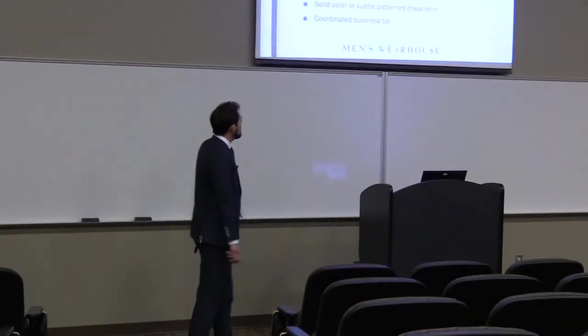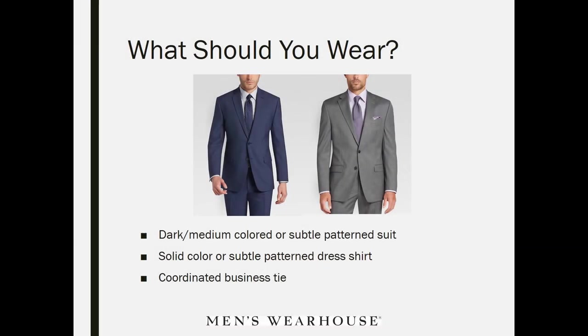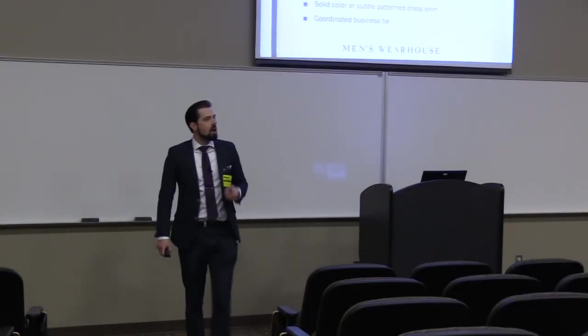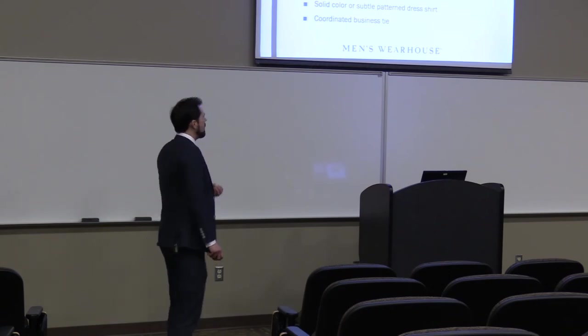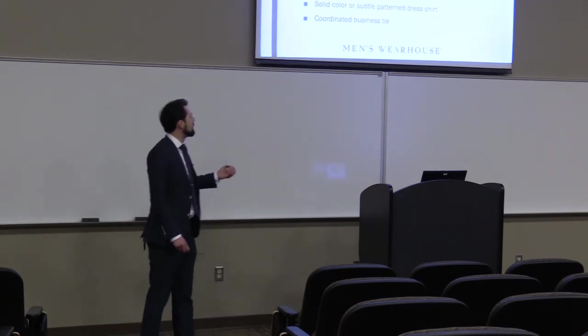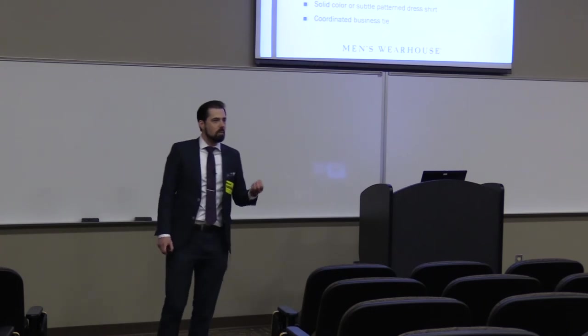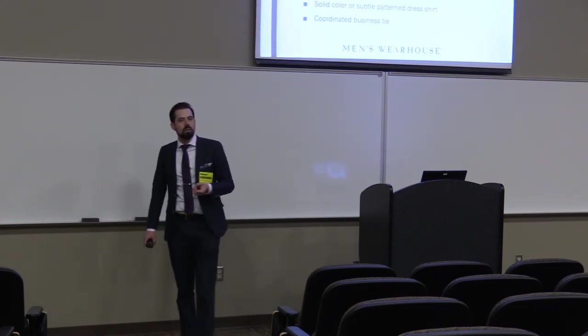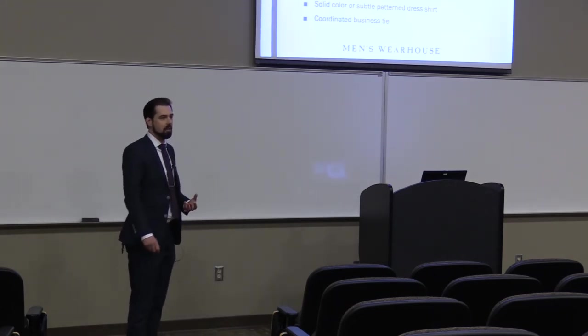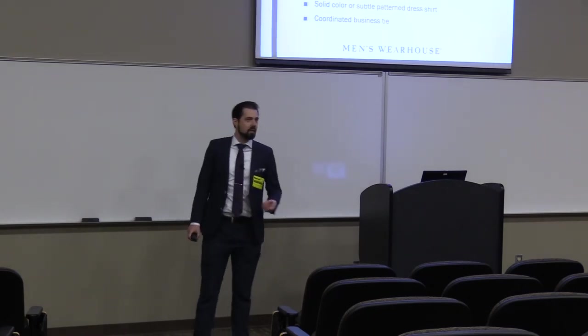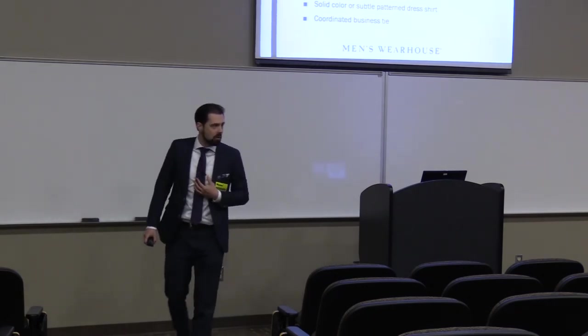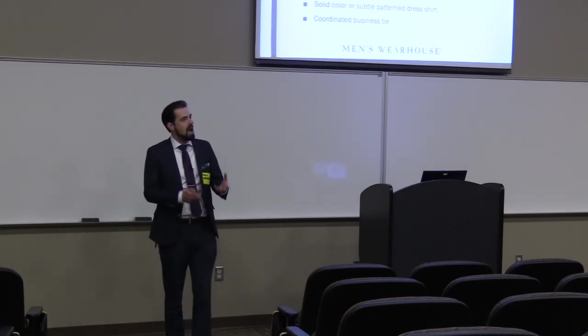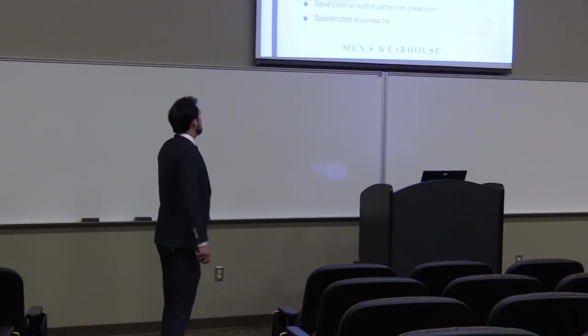All right. So here's what you wear. This is unless you're otherwise told, I'm going to suggest that you should wear what we call business professional. So this is business professional for men. Again, a dark or a medium colored solid suit. Usually we're going to show you blues or grays is what we suggest. A solid color or subtle pattern dress shirt, whites or blues typically, and a coordinated business tie. Coordinated business tie doesn't mean it has to have stripes. It doesn't mean it has to be solid. What it does mean is no Tasmanian devil, no Chief Wahoo on it, no Cincinnati Bengals branding, anything like that. You want it to be a business tie. You can have your own personality from there. Okay.